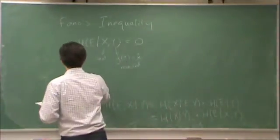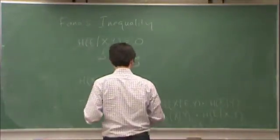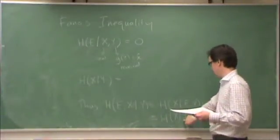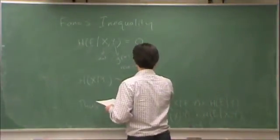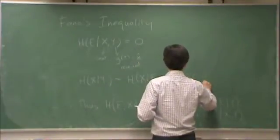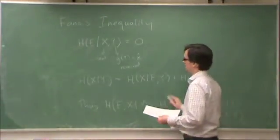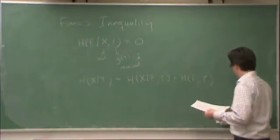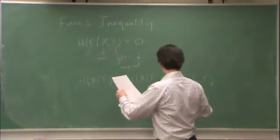So, we can rewrite this as h of x given y is equal to, in other words, I can take these two terms and make them equal, except this is zero. So, therefore, h of x given y is equal to h of x given e and y plus h of e given y.